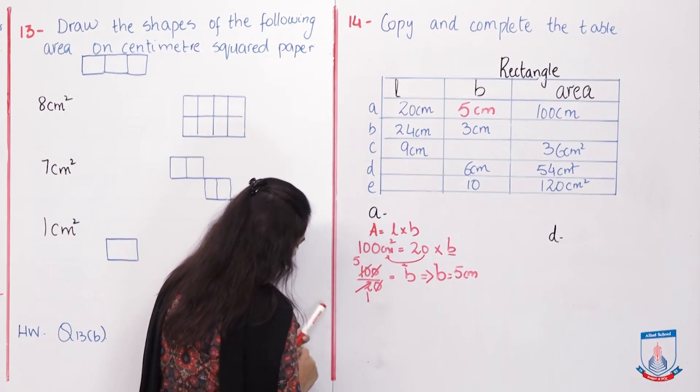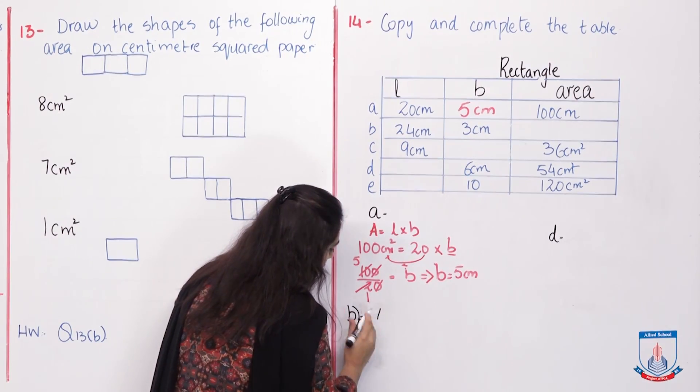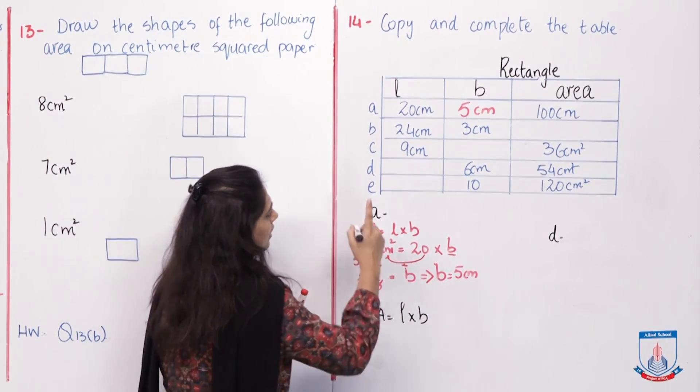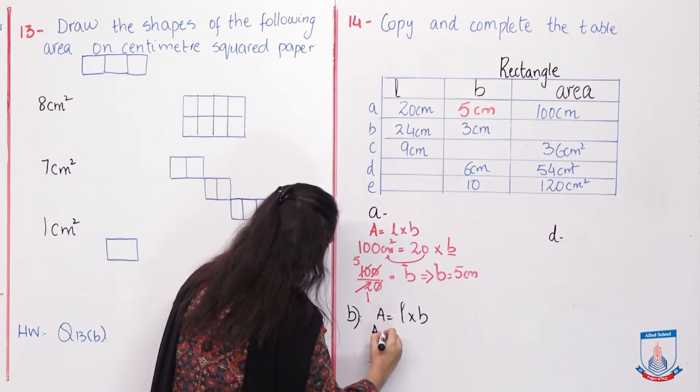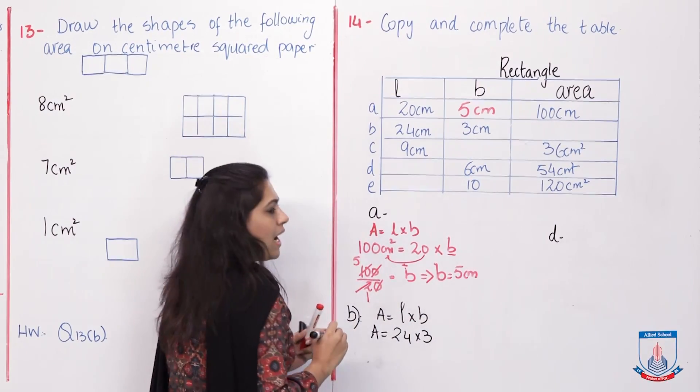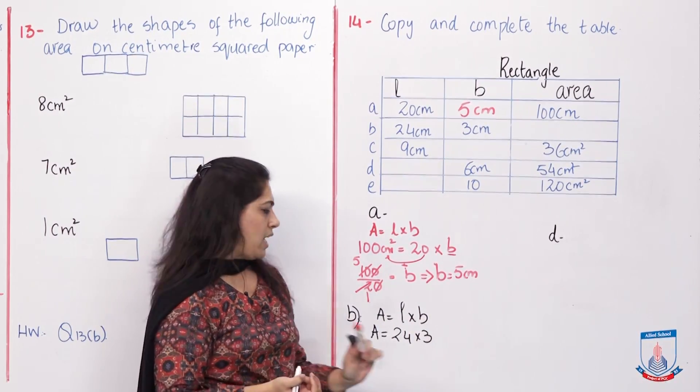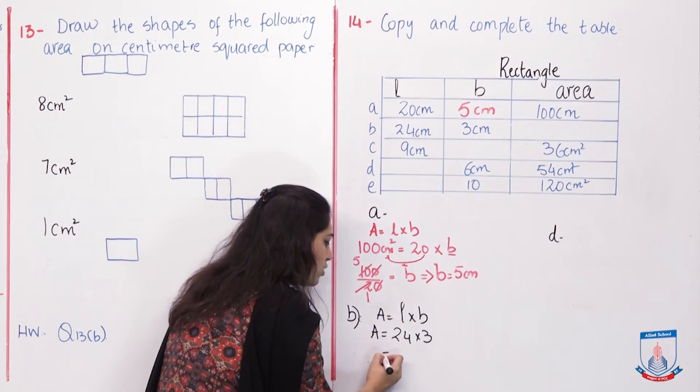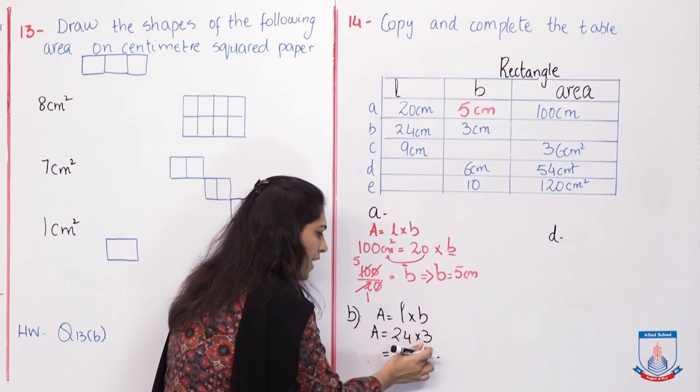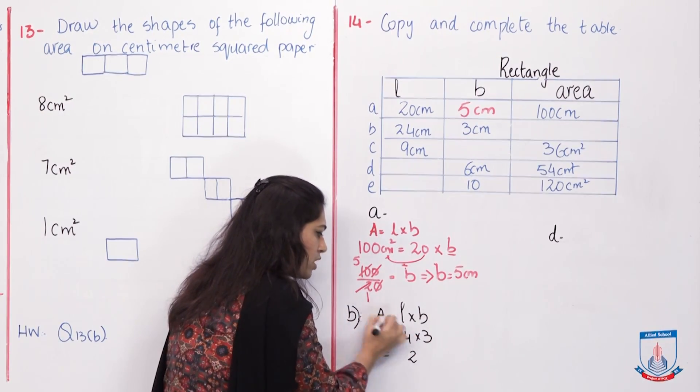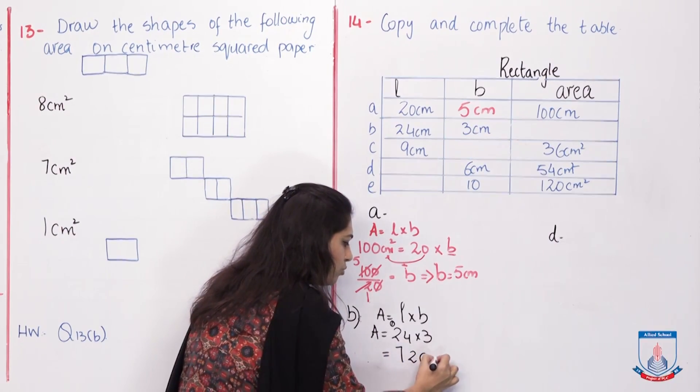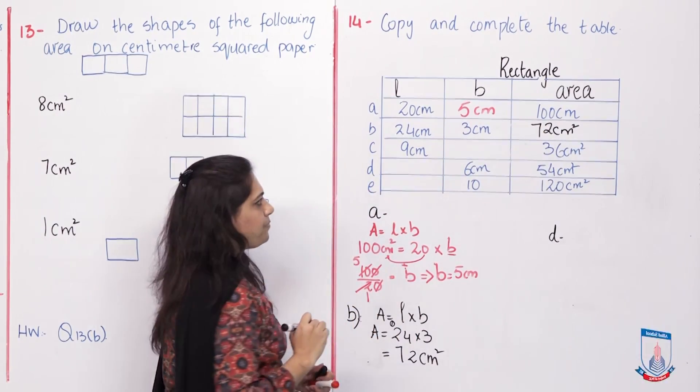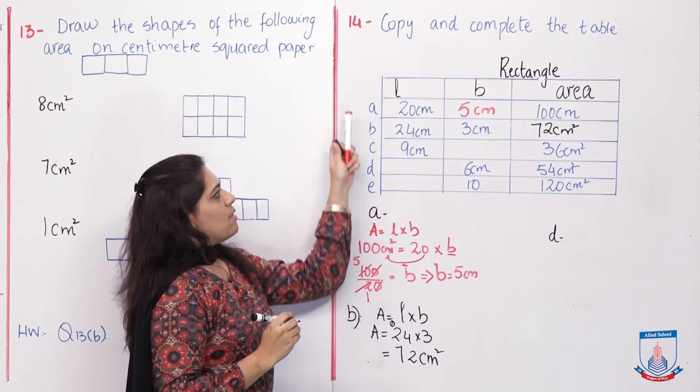Question number B: Area, what is the formula? Length into breadth. What is the length? Length is 24. Area is not given. Length is 24 times 3. I hope you know multiplication with 2 digits. Units first, 3 with units, then 3 with tens. I am just going to do it orally. 3 times 4 will give me 12. And 3 times 2 will give me 6, plus the carry of 1 is 7. Which will give me 72.